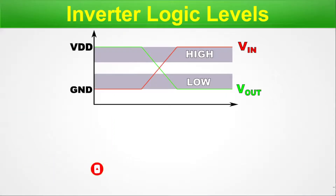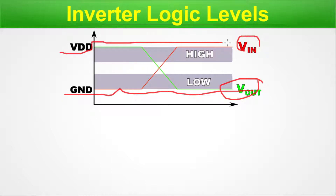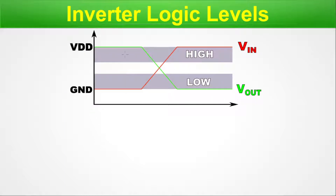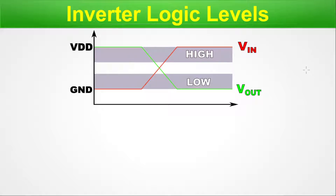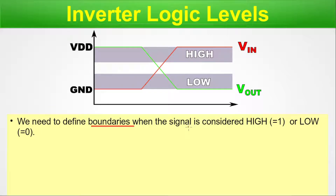Inverter logic levels. Here we have a simple graph with VIN on the x-axis and VOUT on the y-axis, ranging from ground to VDD. As VIN changes from zero level to the high level, the output changes from high toward low. You can see the high output is a band at the top and the low output is a band at the bottom, and in between we have a forbidden region — we cannot say either this is zero or one. We need to define boundaries when the signal is considered high (equal to one) or low (equal to zero).